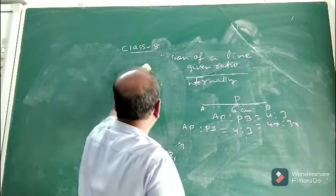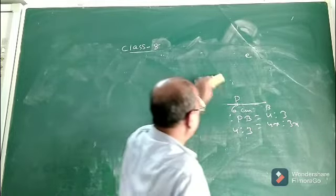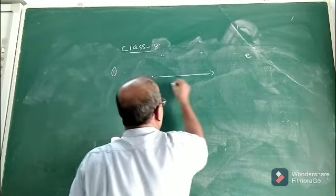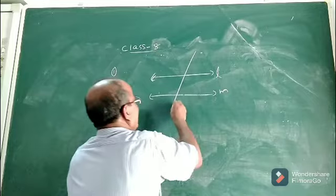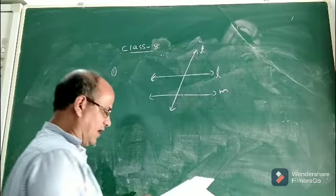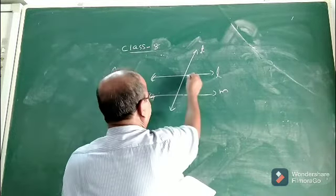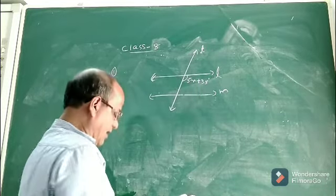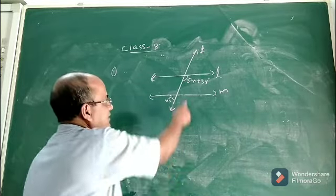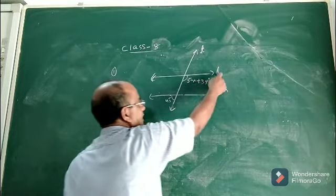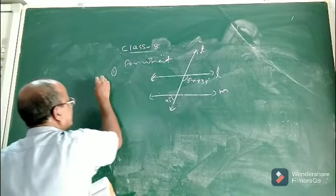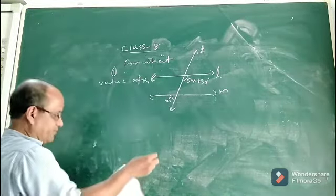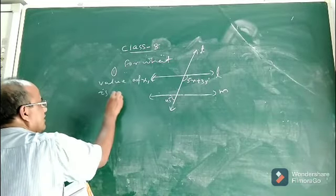Suppose you are given a figure with two lines L and M, and T is a transversal. This angle is given as 5x plus 35 degrees, and this angle is given as 45 degrees. The question is: for what value of x will line L be parallel to line M?